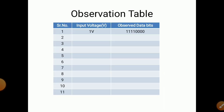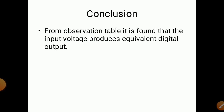The observation table has two columns: the first is input voltage — 1 volt, 2 volt, 3 volt — and the second is the observed data bits. For different inputs we get different combinations of 1s and 0s. From the observation table it is found that the input voltage produces an equivalent digital output. Whatever input voltage is given, it produces an equivalent digital output.